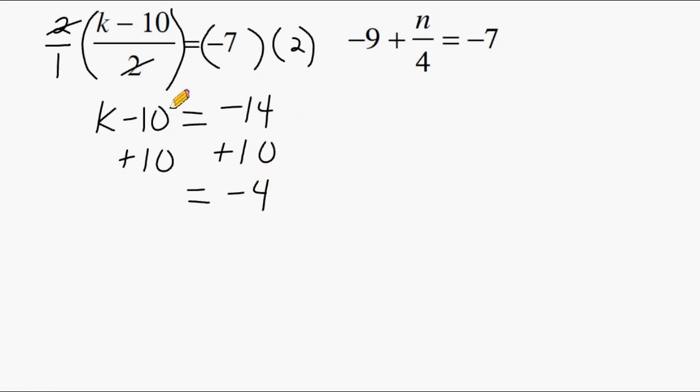On the left-hand side, opposite integers result in zero. And k plus or minus zero is just k. So we just have k equals four. I'm sorry, I should have said k equals negative four.